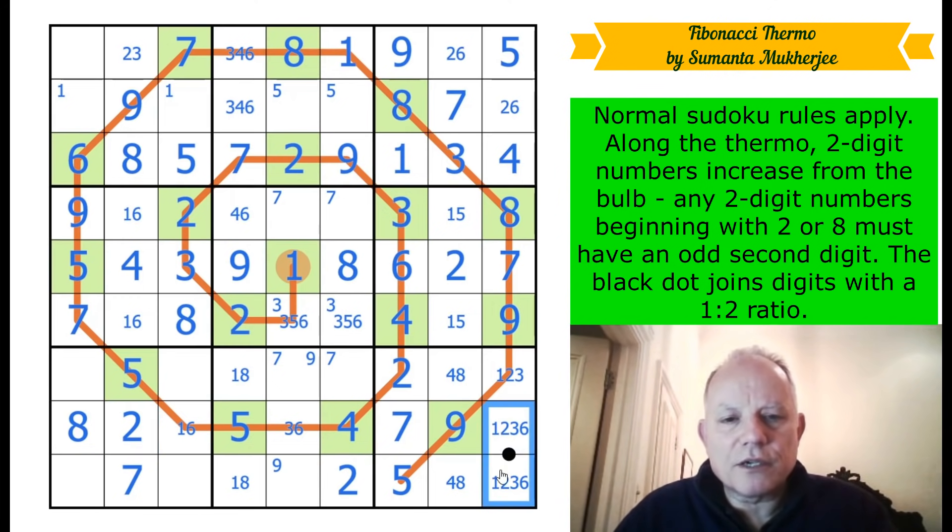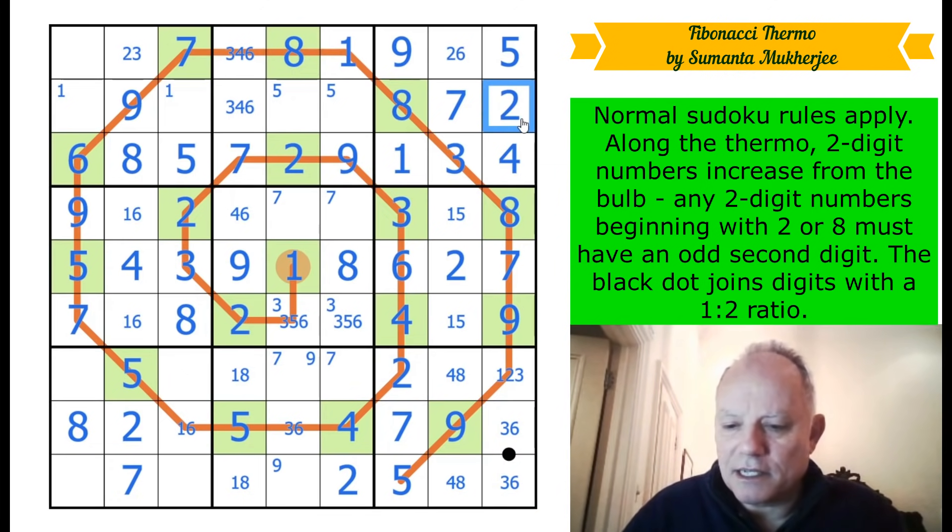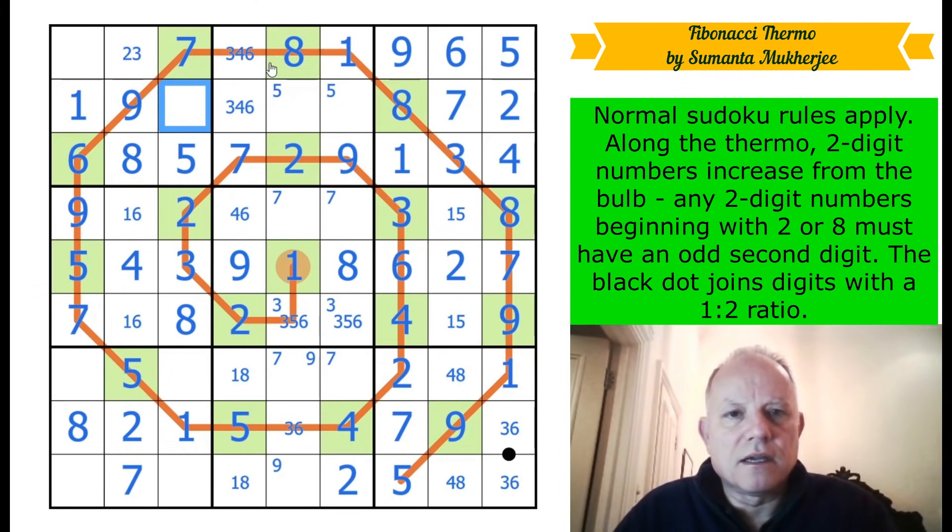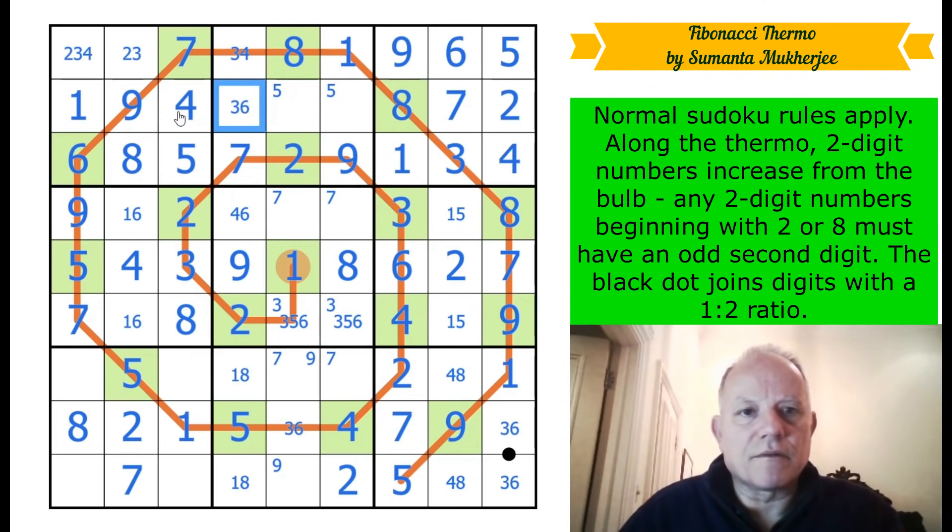Then that becomes a two. Two. Now, oh, this couldn't have a two on it because of that two. There we go. So it's a three, six pair. Yes, that is going to help. Two, six, one there. This has become a one in its row. That fixes one at the top of the grid. This can't be a six.